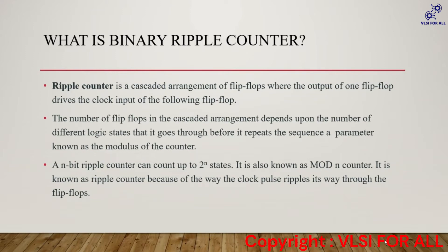First question: what is a ripple counter? A ripple counter is a cascaded arrangement of flip-flops where the output of one flip-flop drives the clock input of the following flip-flop. The flip-flops are arranged in cascaded form. An n-bit ripple counter can count up to 2 power n states. For example, a 3-bit ripple counter can count 2 power 3, that is 8 states. It is also known as a modular counter.